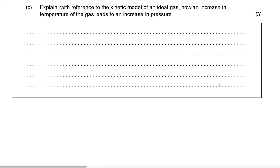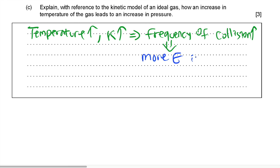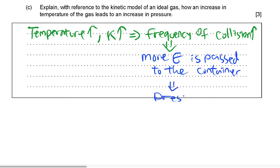Explain with reference to the kinetic model of an ideal gas how an increase in temperature of the gas leads to an increase in pressure. As temperature increases, kinetic energy of the particles increases. As kinetic energy increases, the frequency of collisions increases. As the frequency of collisions increases, more energy is transferred to the container walls, and this leads to an increase in pressure.